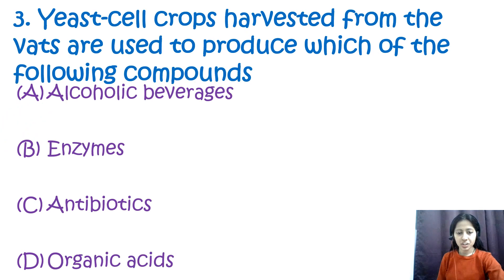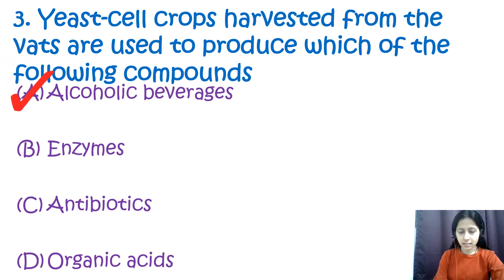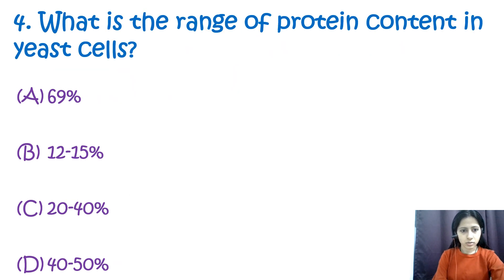Question number three: yeast cell crops harvested from the vats are used to produce which of the following compounds? Option A: alcoholic beverages, option B: enzymes, option C: antibiotics, and option D: organic acids. Yeast cell crops harvested from vats are used to produce alcoholic beverages — option A. Yeast is a single-cell microorganism that can ferment sugars to produce alcohols and carbon dioxide.